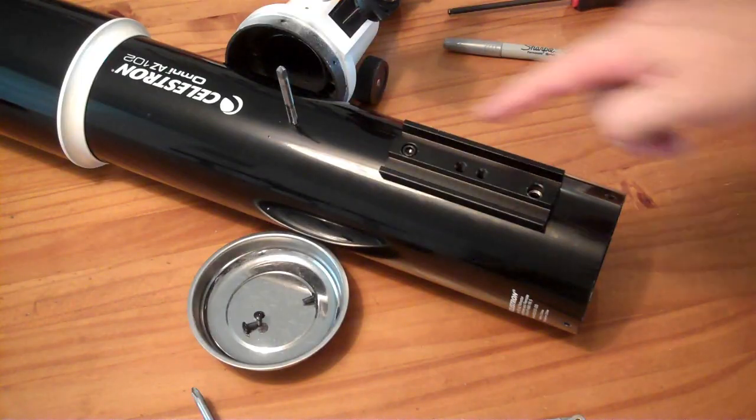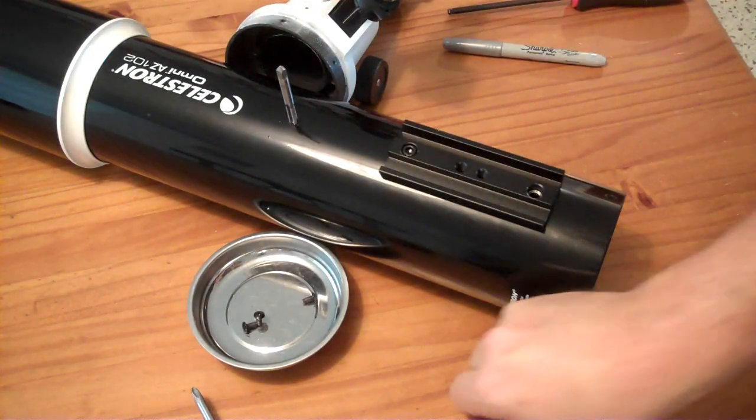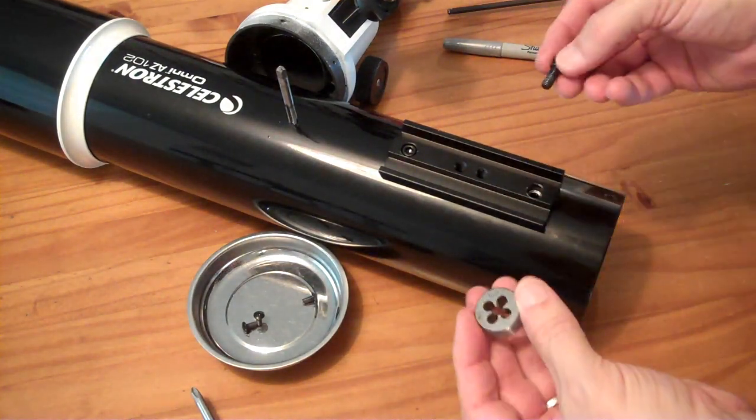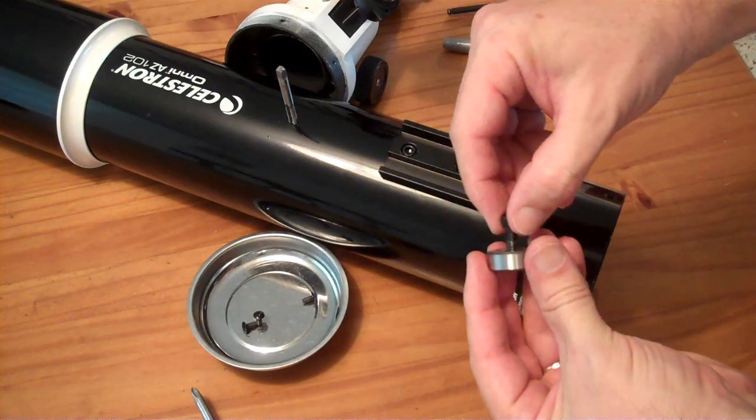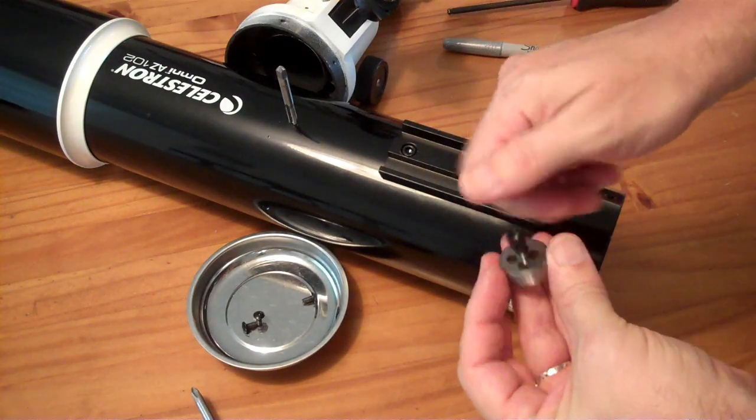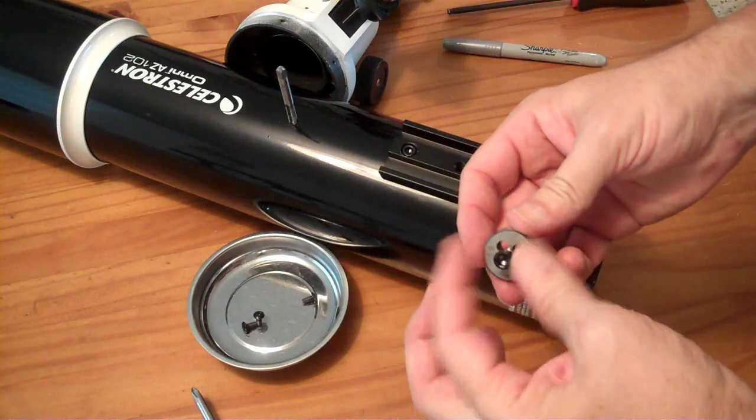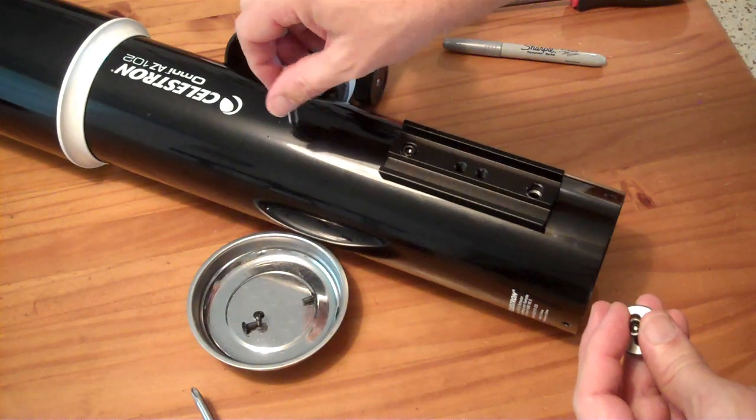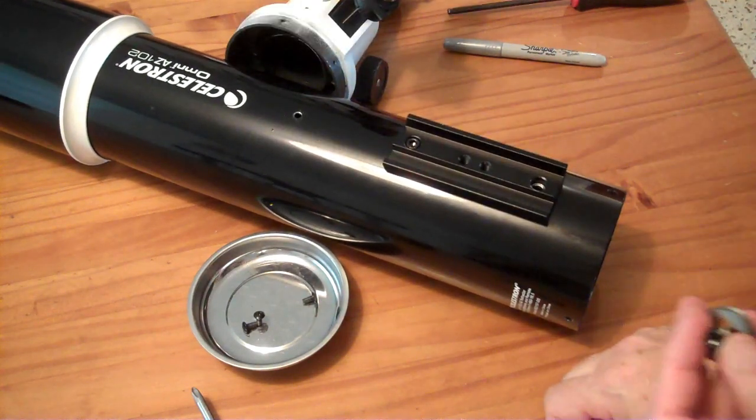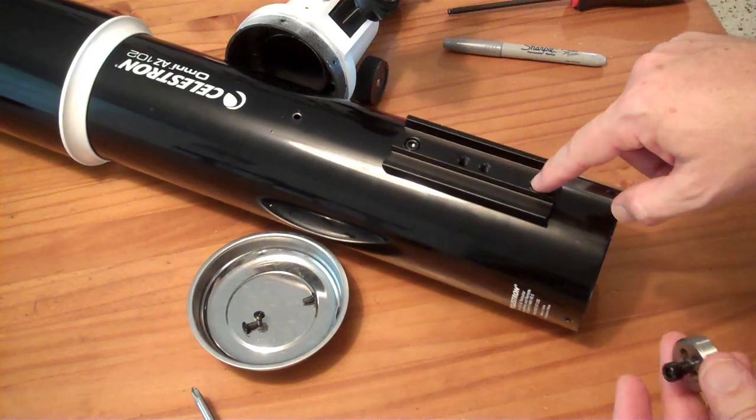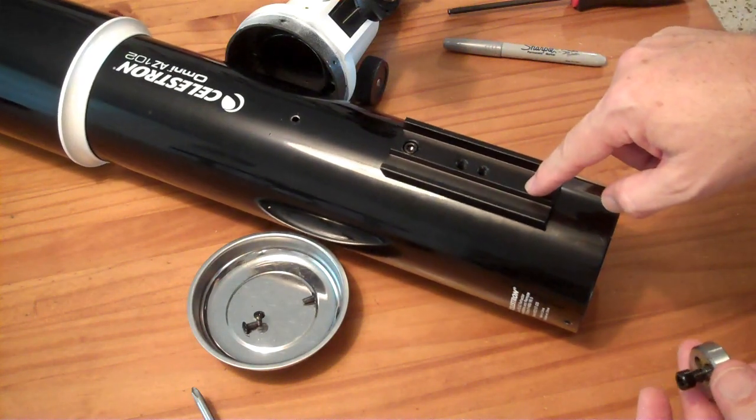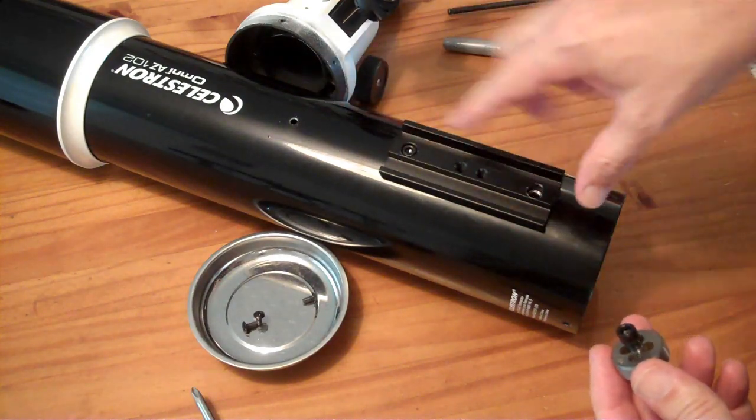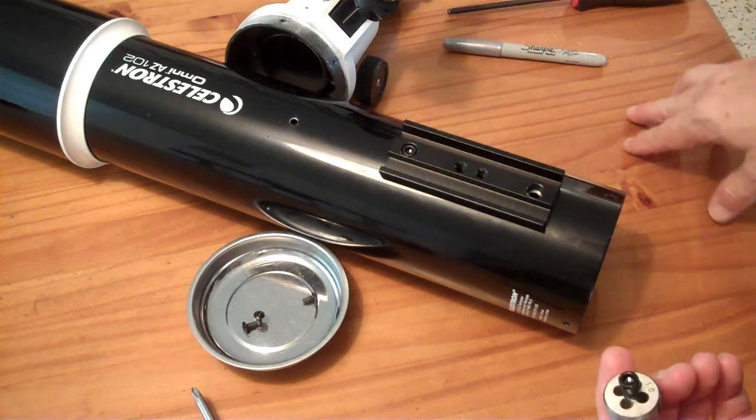So the bolts on my particular Celestron Omni AZ-102 have a 1.0 thread pitch, and they are M6 1.0. I've verified this by screwing this guy into my M6 by 1.0 die, and then also taking the M6 by 1.0 tap and kind of screwing it into the existing hole. So you could tap and drill this hole for any bolt you happen to have that would fit in that opening, but I really like the idea of reusing the existing bolt just so I can swap it back and forth without swapping out different bolts.